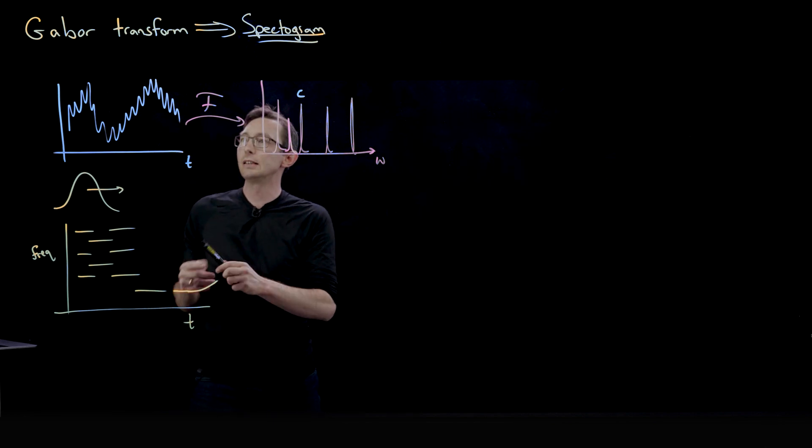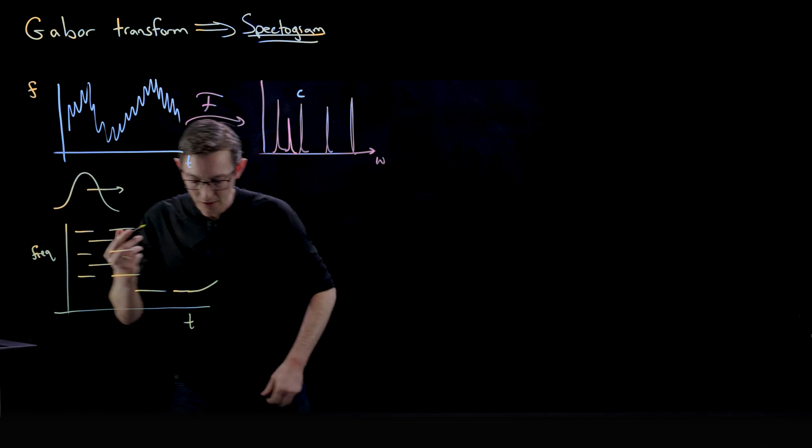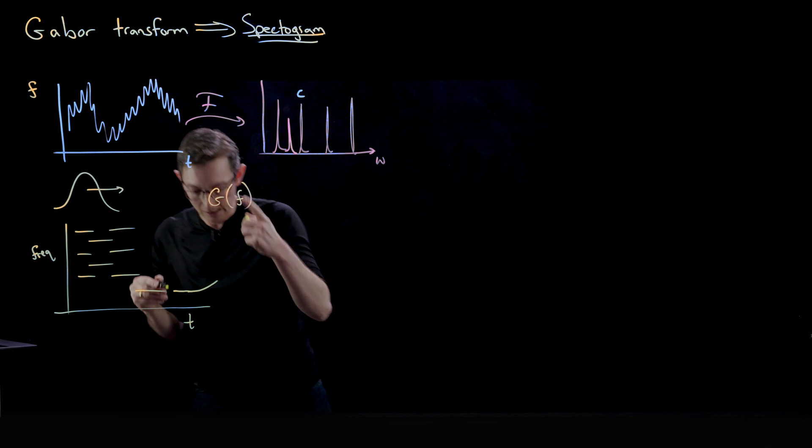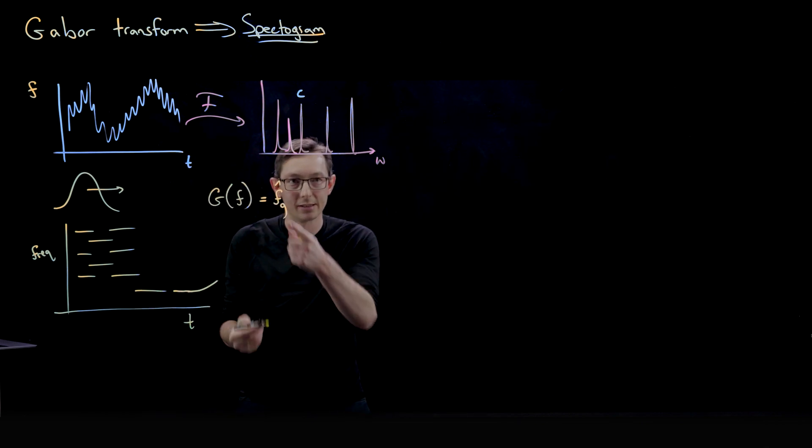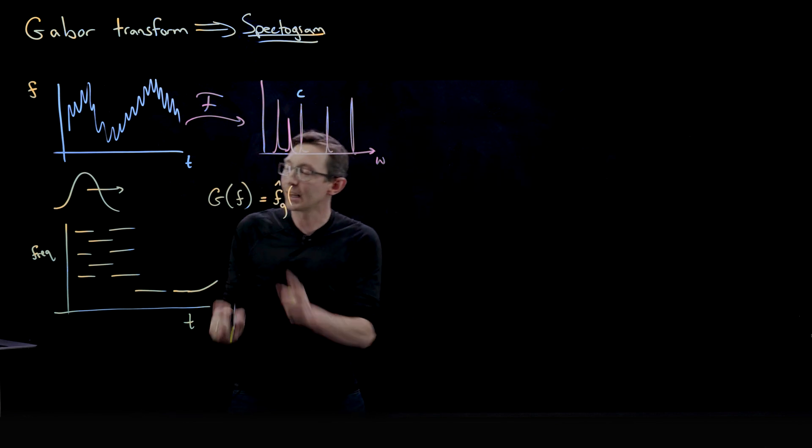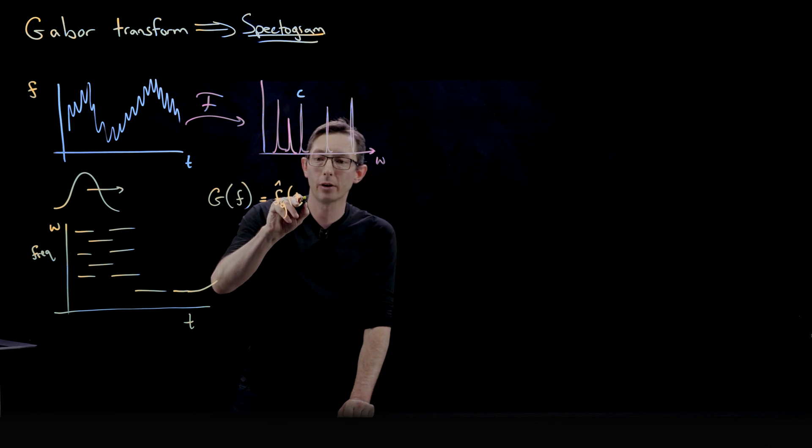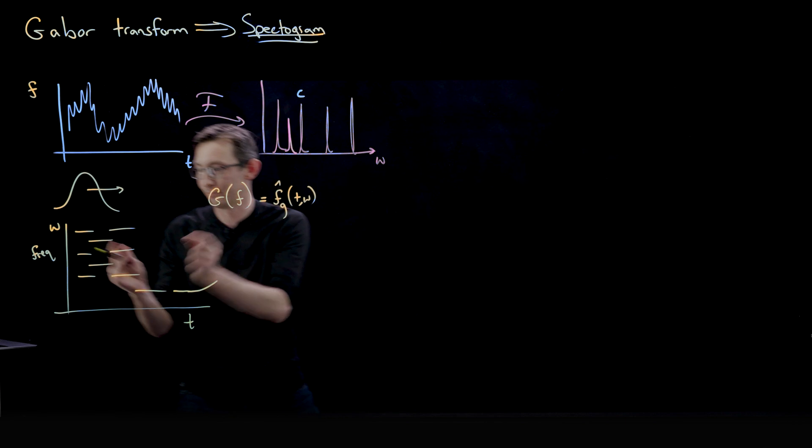And what you do is if you had some signal f, let's call this f of t, then your Gabor transform of f is going to be this function f hat sub g. This is just telling us it's a Gabor transform. And it's going to be a function of both time and frequency. So unlike the Fourier transform, this is going to be a function of time and frequency. So it's a kind of a dual function.